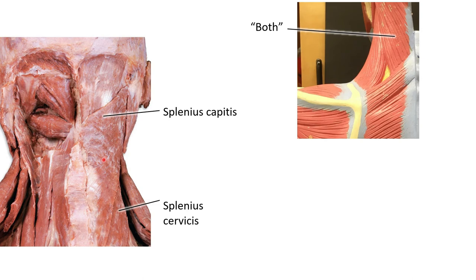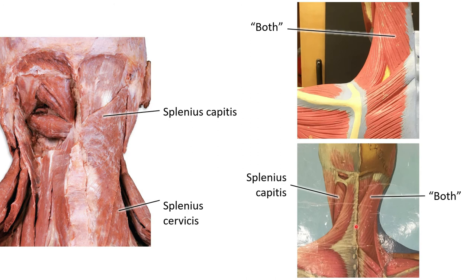On the lab models, one model's key identifies both splenius muscles together without distinguishing between them. On one side of a chart, it's labeled as splenius capitis and cervicis, while on the left side it's identified just as the splenius capitis, because the trapezius is still present there and would be covering any portion classified as part of the splenius cervicis.